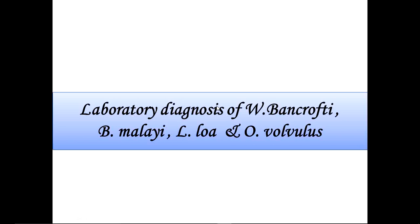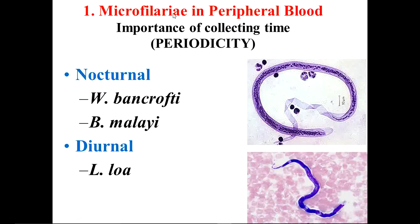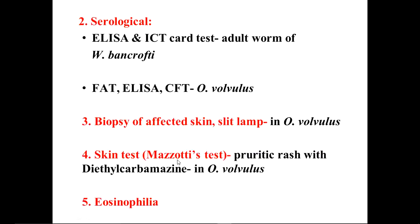Now let's look at the lab diagnosis of these tissue nematodes. You can find the larval form in peripheral blood, and periodicity is very important — you need to be careful about timing when collecting blood. Nocturnal periodicity means the microfilaria come into blood during nighttime; Wuchereria bancrofti and Brugia malayi have nocturnal periodicity. Loa loa has diurnal periodicity, meaning they come into blood during daytime. There are also serological tests such as ELISA, immunochromatography test, fluorescent antibody test, and complement fixation test for Wuchereria bancrofti and Onchocerca volvulus.